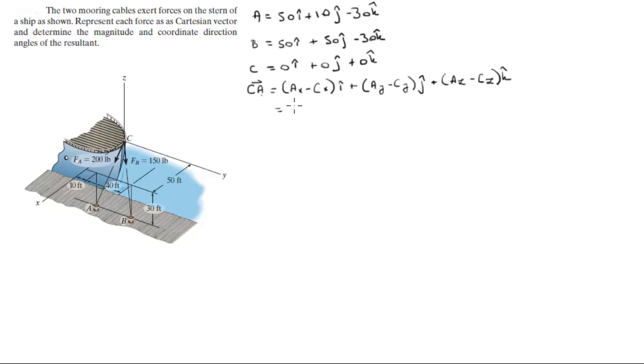You plug the numbers in, you're going to get that this is equal to 50i plus 10j minus 30k. This is vector CA.